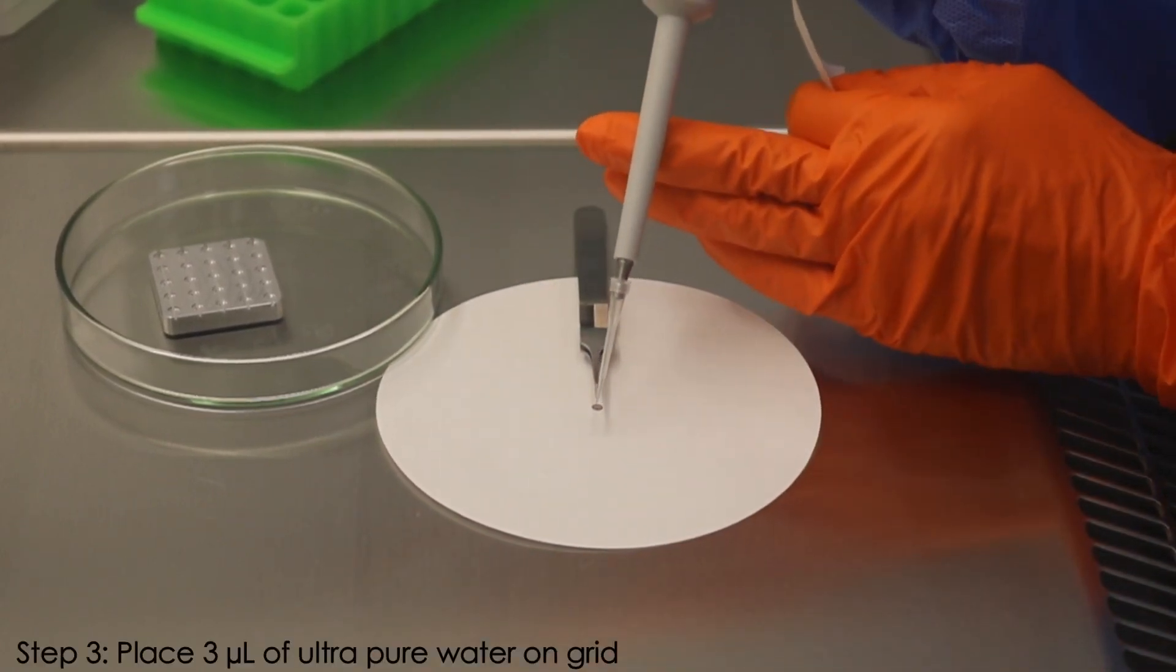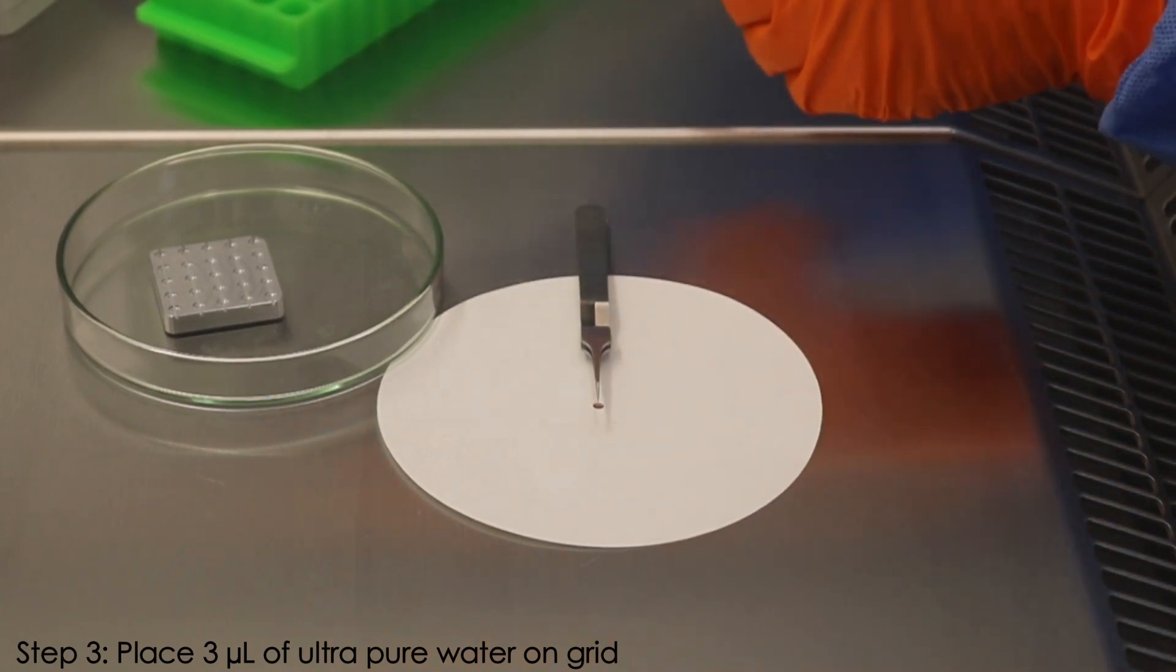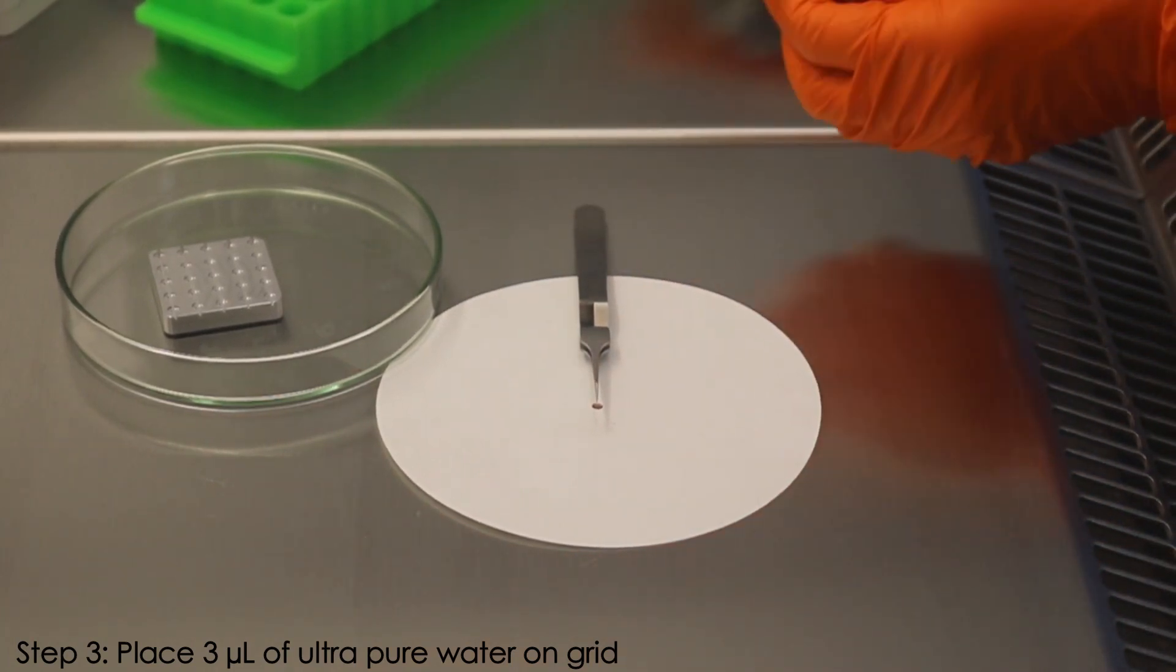Immediately after blotting, place 3 microliters of ultra-pure water on the grid and prepare a pipette with 3 microliters of stain.